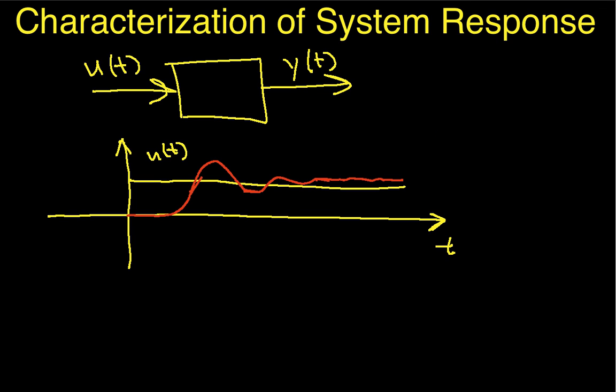So typically, one of two things happen. One thing that could happen is the output just basically becomes more or less constant. And in this case, we define what we call the steady state error to be the difference between our desired value and the value that actually ends up coming out.